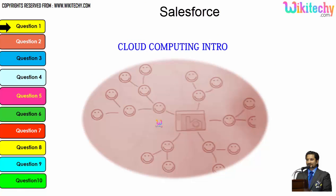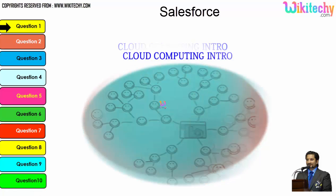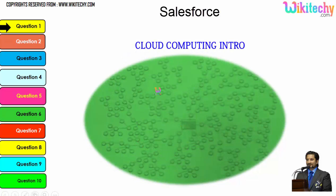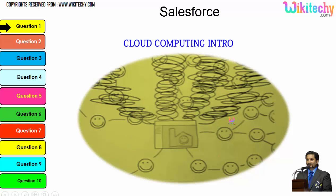Let's talk about the cloud computing intro. This is a computer which is really connected to the server, and this server is monitoring this computer. Once the network becomes bigger, the monitoring becomes tougher for this particular server. If more computers are added, the network gets really bigger and the monitoring system becomes really slow.